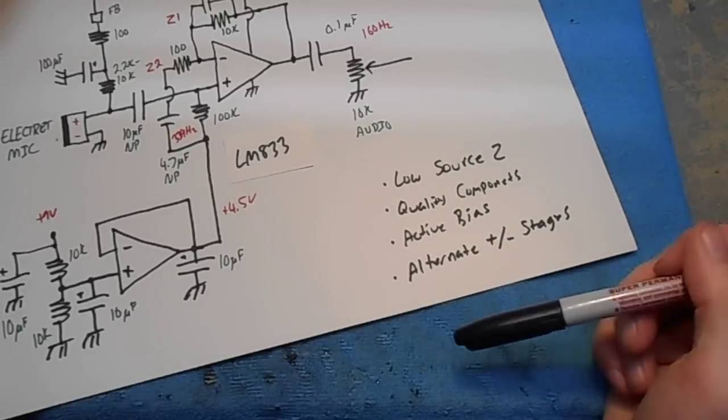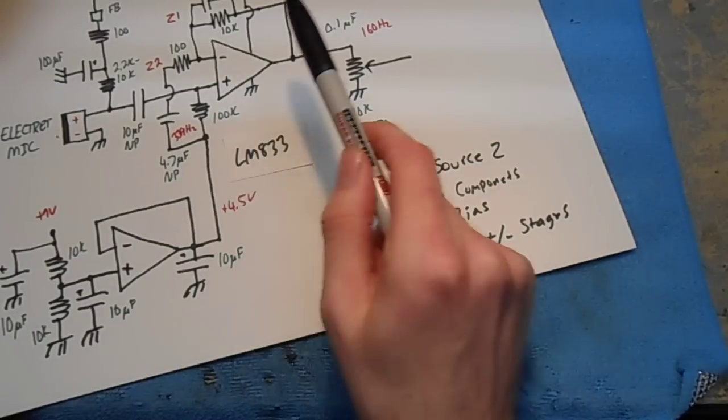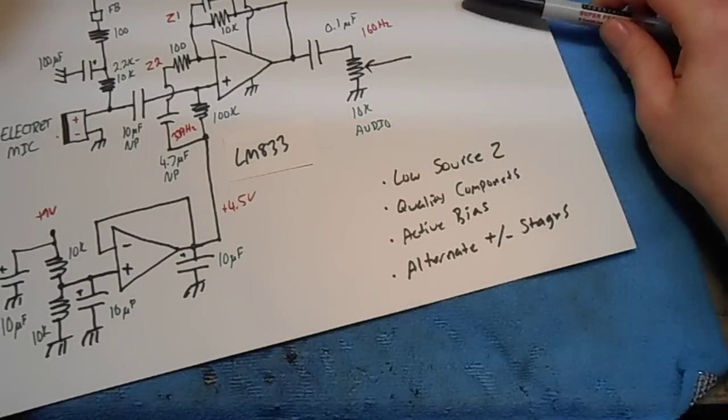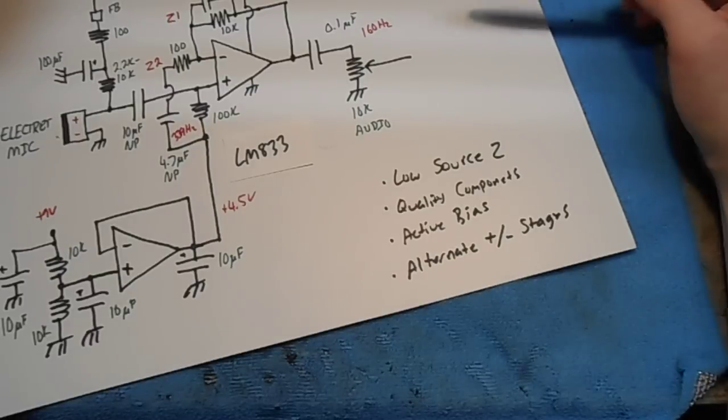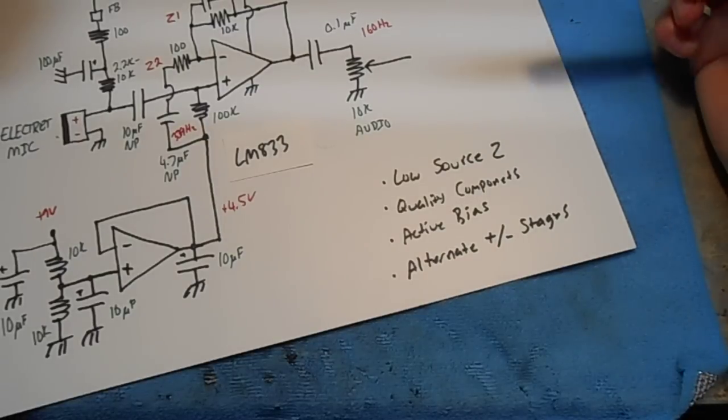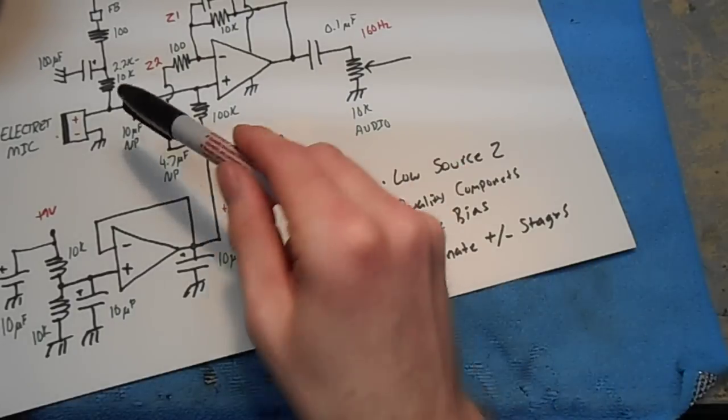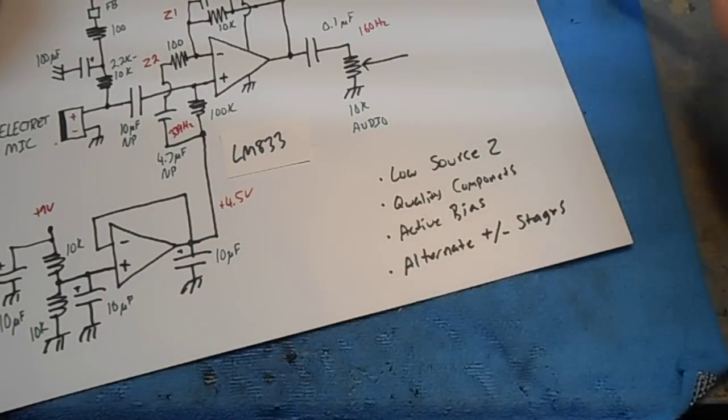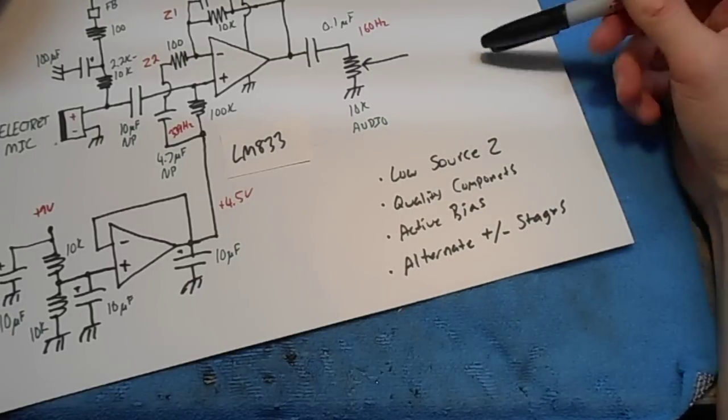You also want to alternate your gain stages. So this is a non-inverting op-amp configured right now. So in our next stage, we'd want to use the inverting. If we had to need to add another filter, or if we have to use an audio amplifier with selectable inputs, we'd want to run it into the inverting stage. So by going non-inverting, inverting, non-inverting, inverting, it prevents any sort of feedback.